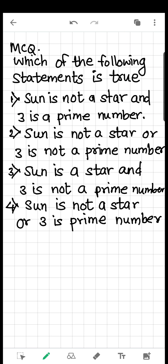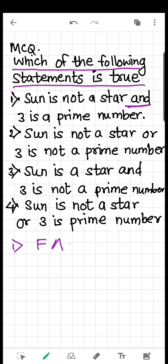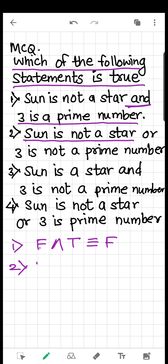Now let's solve an MCQ: which of the following statements is true? We have four options. Option 1: 'Sun is not a star AND three is a prime number.' Sun is a star, so 'sun is not a star' is false. 'Three is a prime number' is true. False AND true is false. Option 2: 'Sun is not a star OR three is not a prime number.' Both are false, so false OR false is also false.